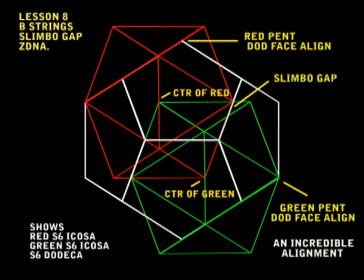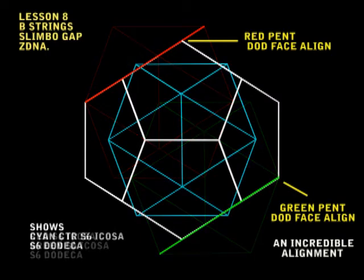Okay, now we'll show a cyan icosa in the center. Now look at the vertices of the cyan icosa. They stick out a little bit from the faces of the dodeca, so I've decided to call these slimbo nipples.